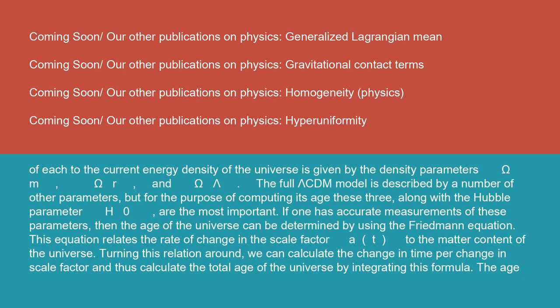This equation relates the rate of change in the scale factor a(t) to the matter content of the universe. Turning this relation around, we can calculate the change in time per change in scale factor, and thus calculate the total age of the universe by integrating this formula.